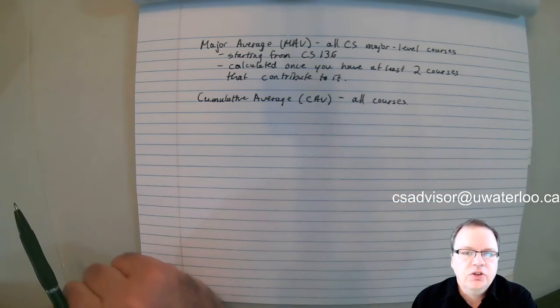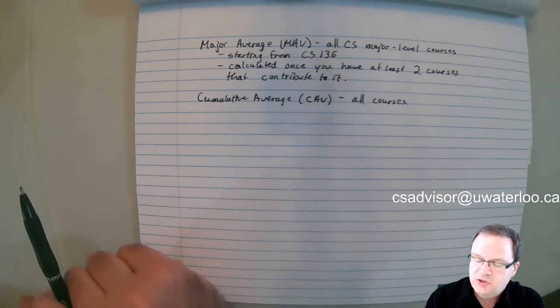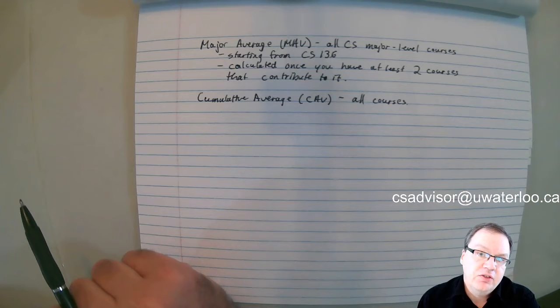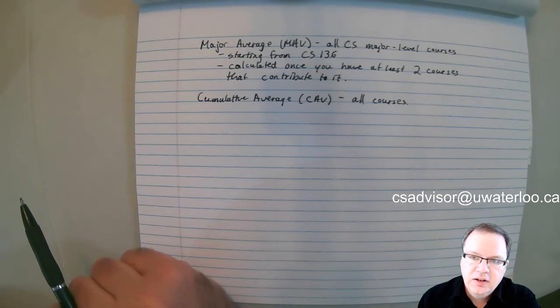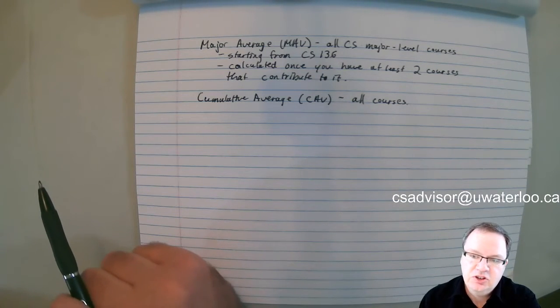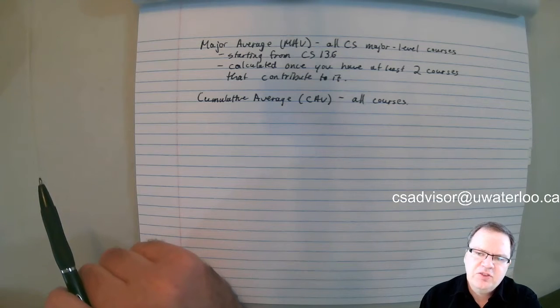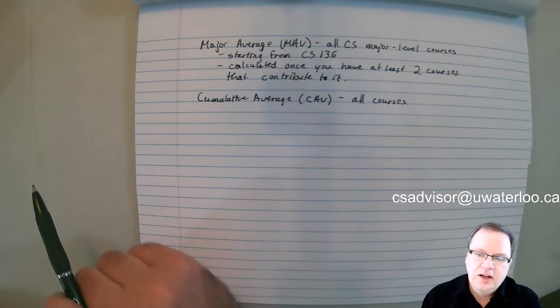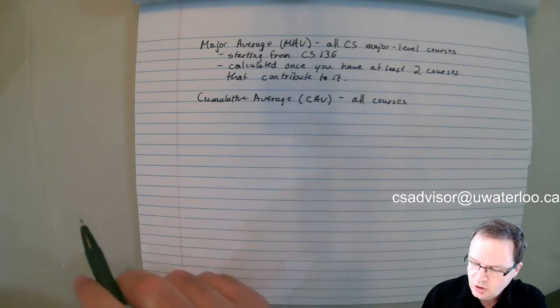The other average that's relevant to you as a student is your cumulative average or your CAV and that's the average of all the courses that you've taken. Now on rare occasions there might be a course or two that is designated as not contributing to your average. That can happen in which case you would leave those out, but that's relatively rare and most of you will not have that situation.